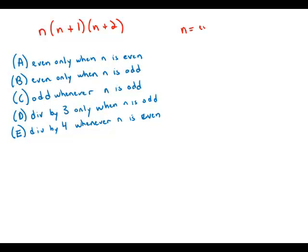If n is even, then what we're going to have is even times odd times even. And this would have to be an even number.